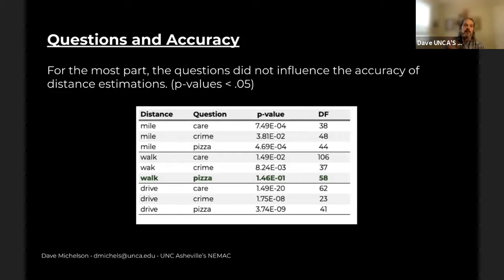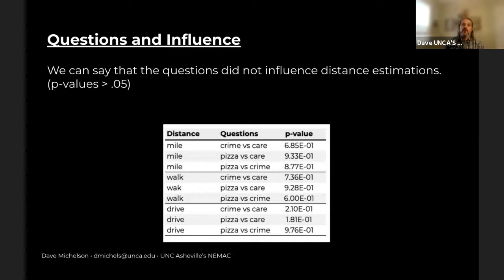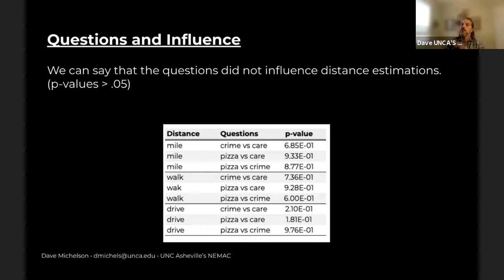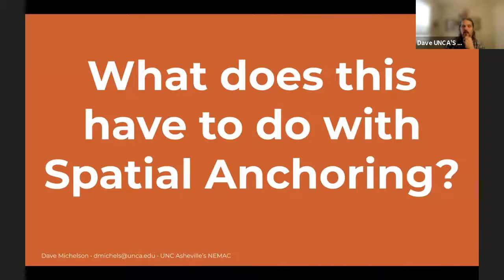Looking at questions and accuracy: one thing I wanted to make sure of was that the questions weren't influencing the distance estimates. For the most part, they're not. It looks like if you're developing an app where people might be walking to get pizza, they might actually be accurate for that. Overall, when looking at the ANOVA results, in no cases do the questions actually influence people's estimations — in every case the p-values are greater than 0.05. That somewhat surprised me.